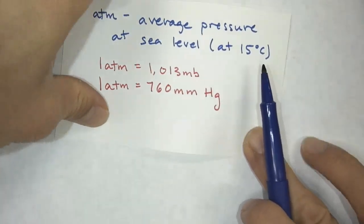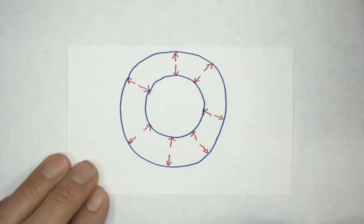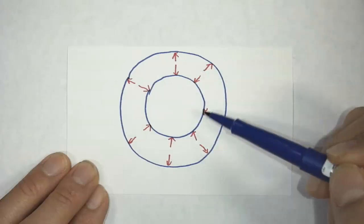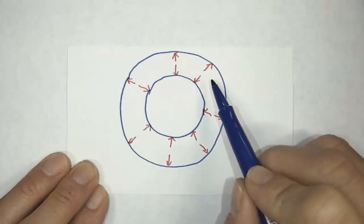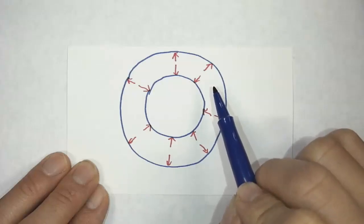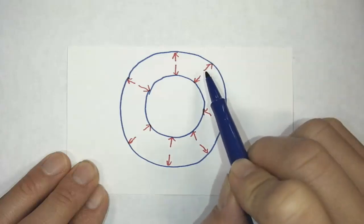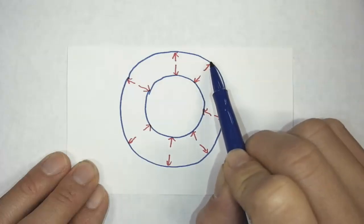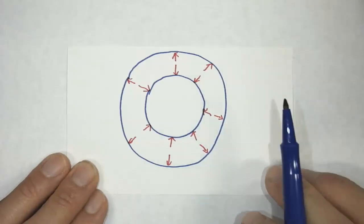One more thing — when we talk about pressure we're often dealing with fluids: liquids or gases. In a tire, we have air pressure inside. The molecules are moving and bouncing all around, exerting forces in all different directions. But the net force at each location on the surface is perpendicular to the surface of the tire. That's a key point.